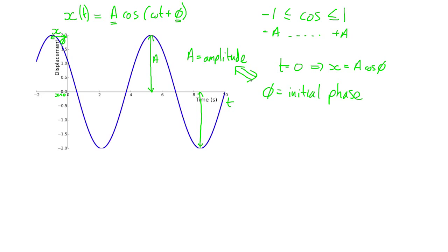The amplitude and the initial phase are determined by the starting conditions — the initial conditions of the system determine both the initial phase and the amplitude, and they are not intrinsic to the actual system itself. For different mass-spring systems, even with identical mass and spring, you can give them different amplitudes and different initial phases just by starting them at different positions and with different initial velocities. These two quantities are also called the boundary conditions — here it's a boundary in time, determined by the conditions of the system at the initial point in time.